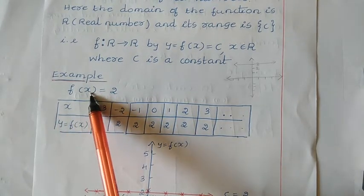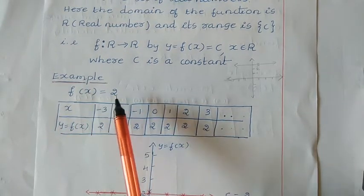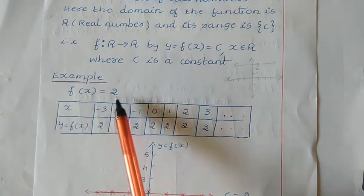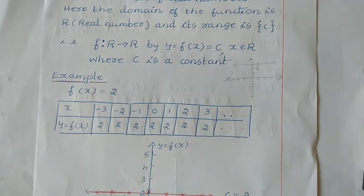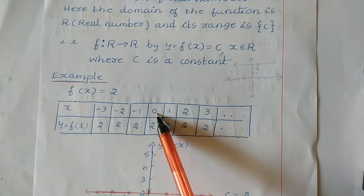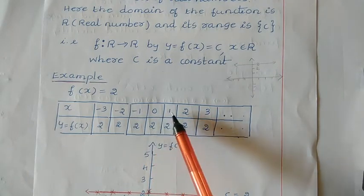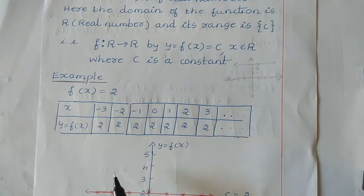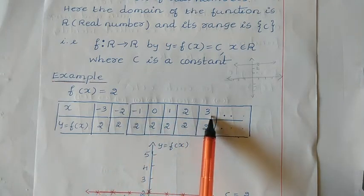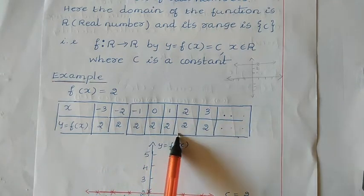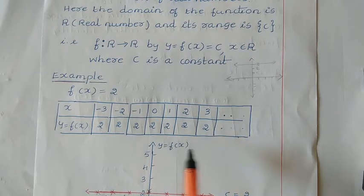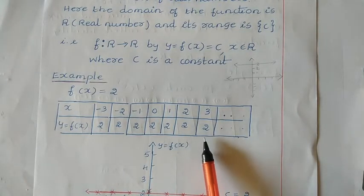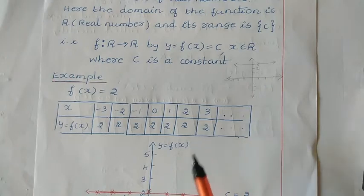If the x value is minus 3, the answer is 2. If x is minus 2, the answer is 2. If x is minus 1, f of 0, f of 1, f of 2, f of 3 — all give the answer 2. So for all the domain values the answer is 2 only. The range is a constant value; in this example the range value is 2.